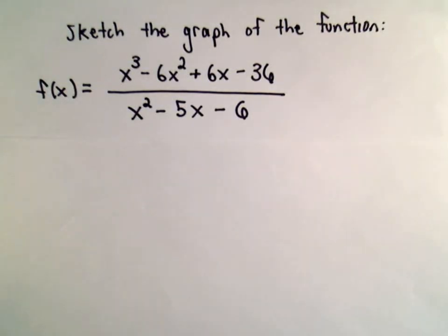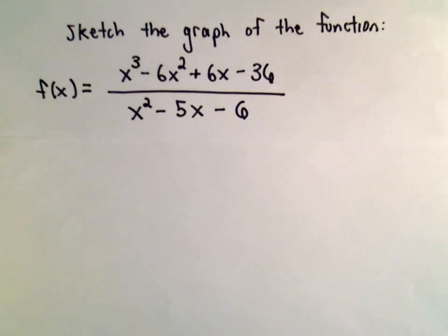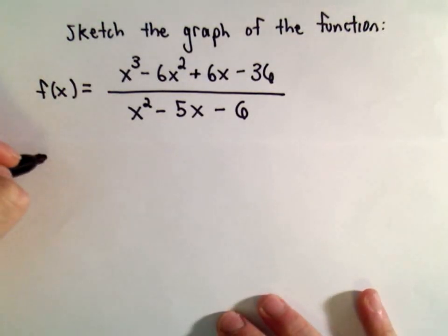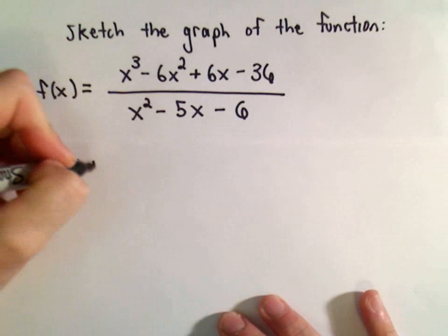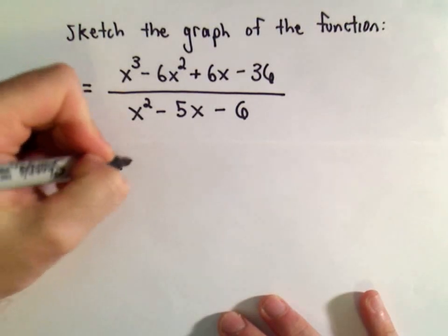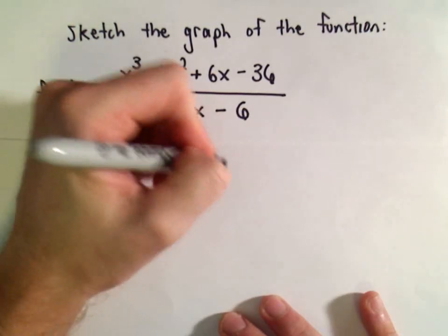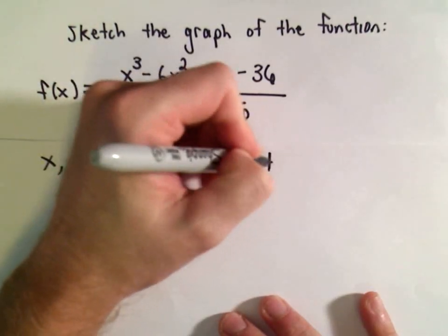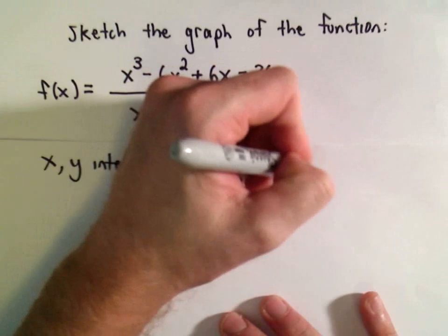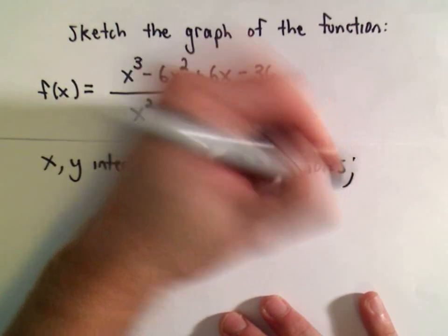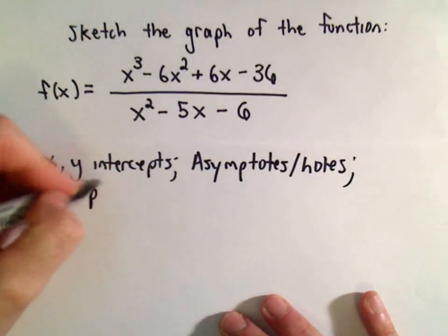In this video we're going to sketch the graph of the rational function x cubed minus 6x squared plus 6x minus 36, divided by x squared minus 5x minus 6. To do this I'm going to find the x and y intercepts if there are any, think about asymptotes, think about if there are any holes in the graph, and then plot some additional points.